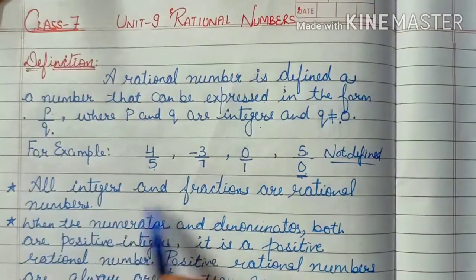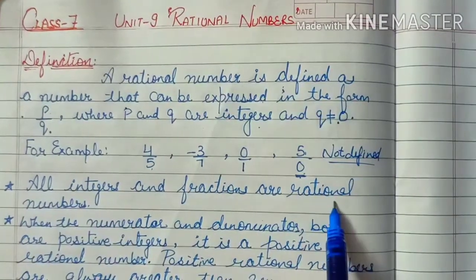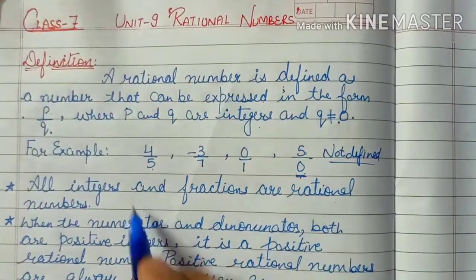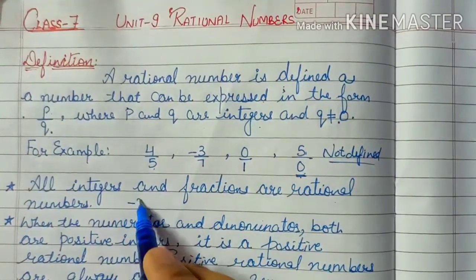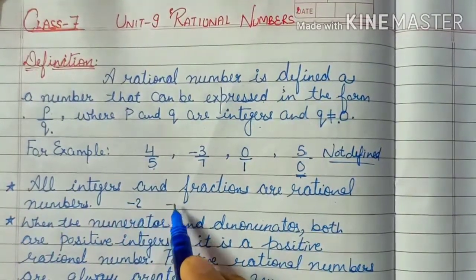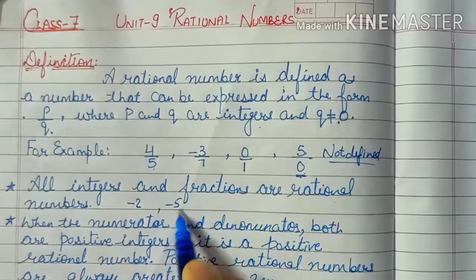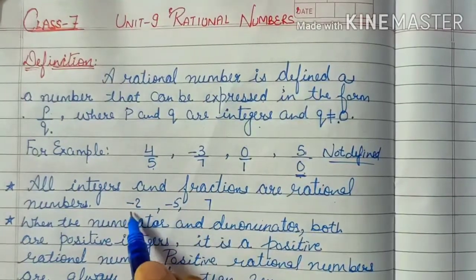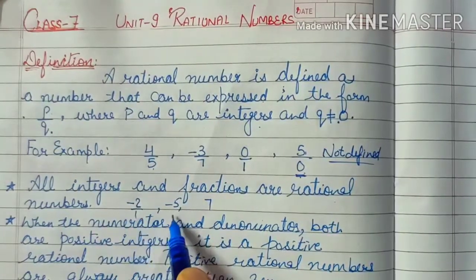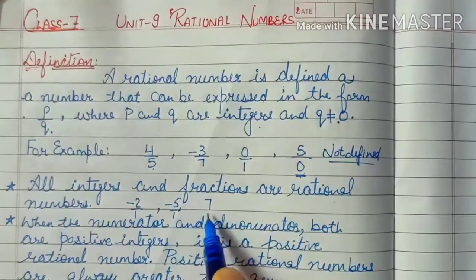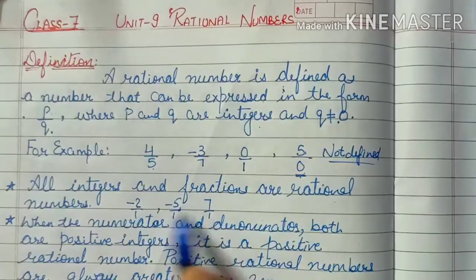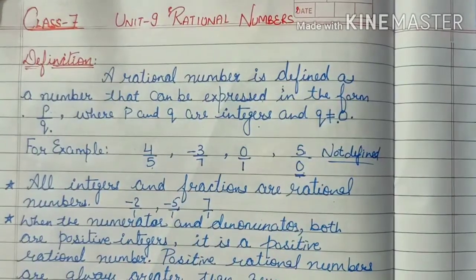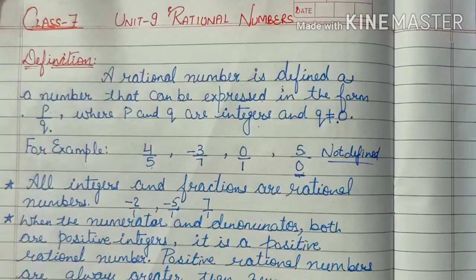Now, all integers and fractions are rational numbers. For example, minus 2, minus 5, 7 — these are all integers. If we write 1 in the denominator, these will all be known as rational numbers.